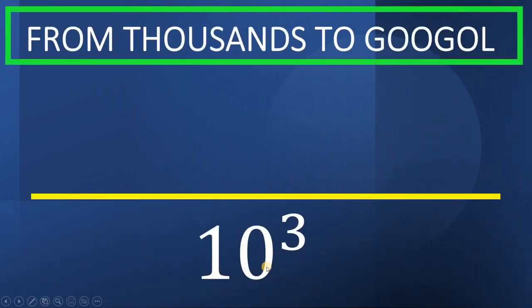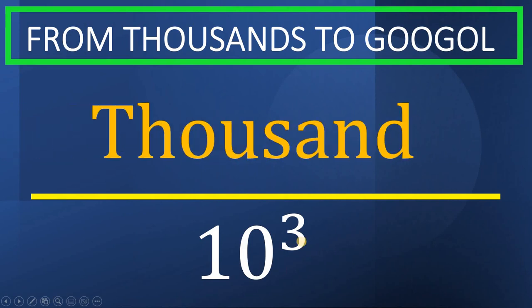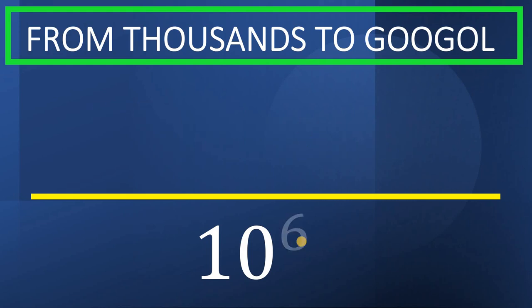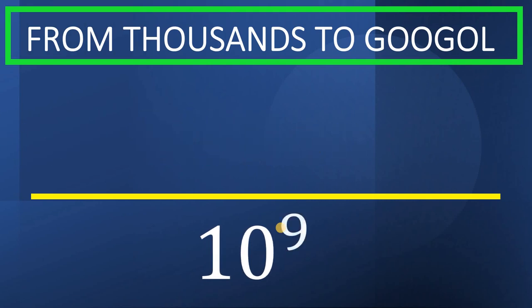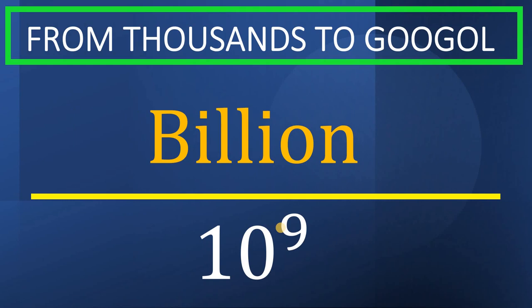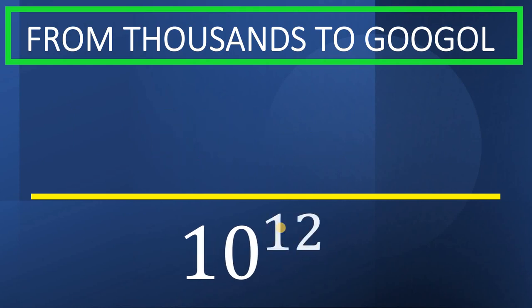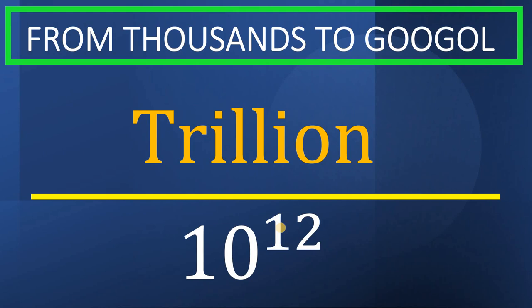Alright, we know the very first number: 1 followed by 3 zeros, or 10 raised to 3 — this is called a thousand. Now, 1 followed by 6 zeros, or 10 raised to the 6th power, this is called a million. 1 followed by 9 zeros is called billion. 10 raised to 12 is called trillion.